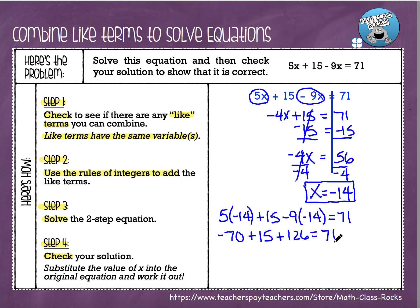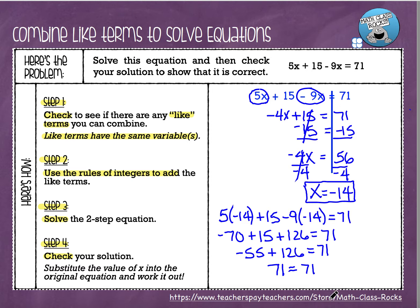From here, I'm just left with an addition problem. I'm going to go from left to right. Negative 70 plus 15 is negative 55, plus 126 equals 71. We have to remember our rules of integers — different signs, so we subtract them and keep the sign of the bigger number. 126 minus 55 is 71. So I end up with 71 equals 71. Because this is the same number on both sides of the equal sign, that tells me my answer is correct. So x equals negative 14 is definitely the solution of this equation.